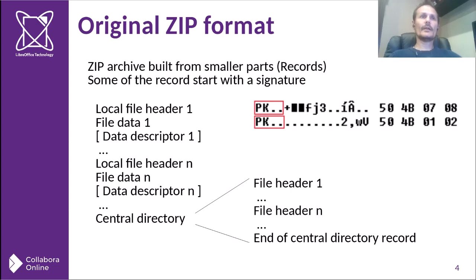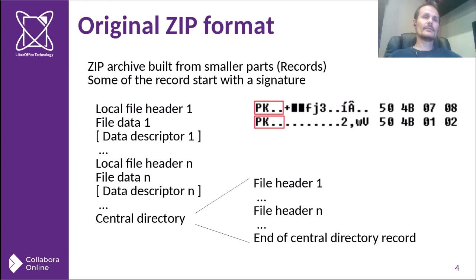The local file header contains some information about the file: how big it is, what its name is. The file data record is the actual file data — it may be compressed or may not. The data descriptor is not needed usually; it's rather for streaming purposes. There are records that may or may not be present in a ZIP archive, depending on other data that we can read from the ZIP archive.